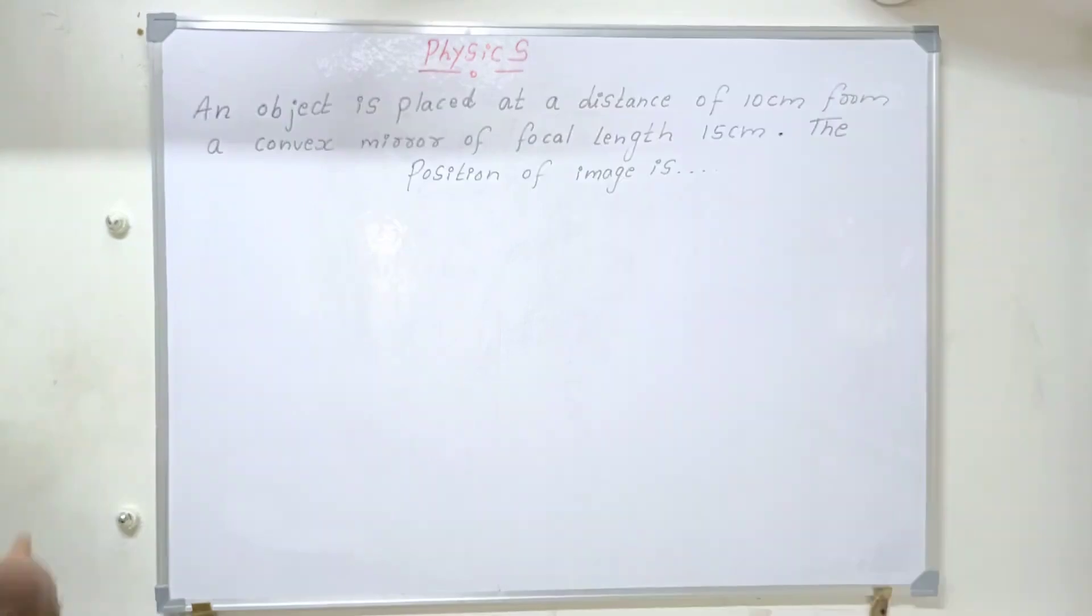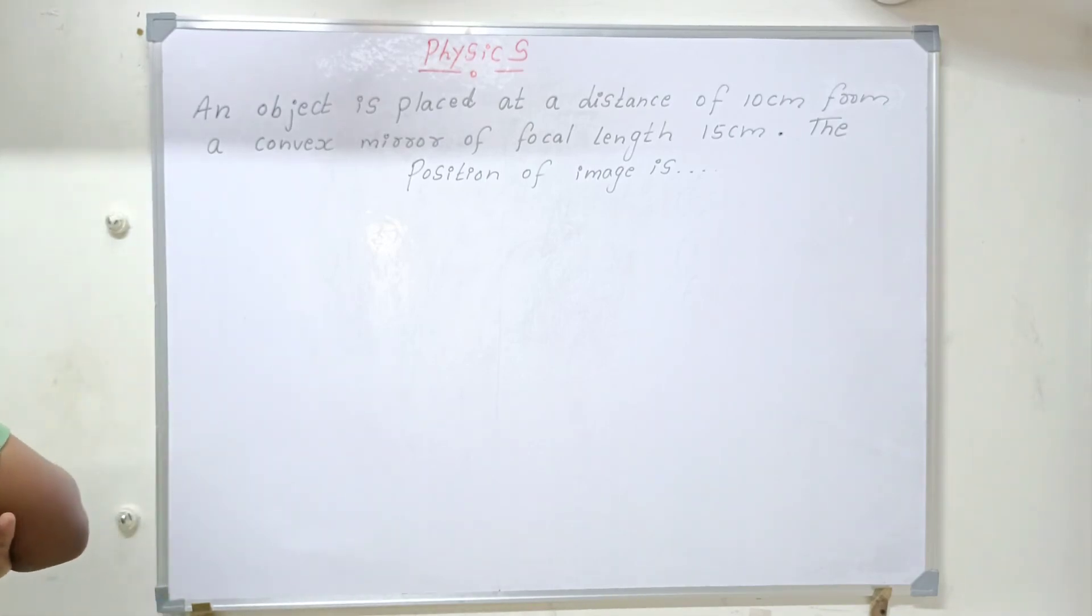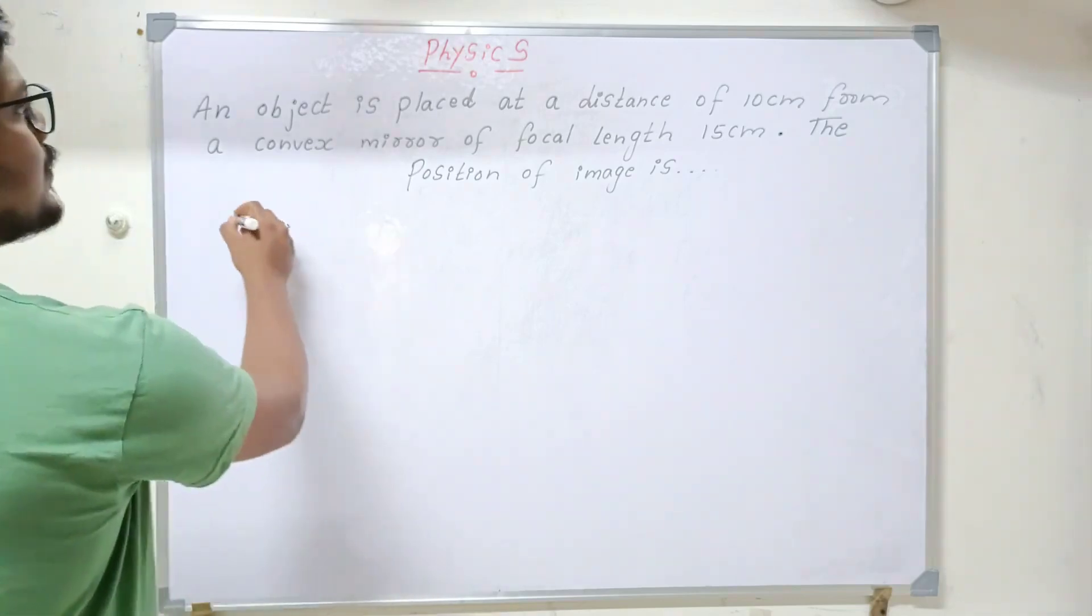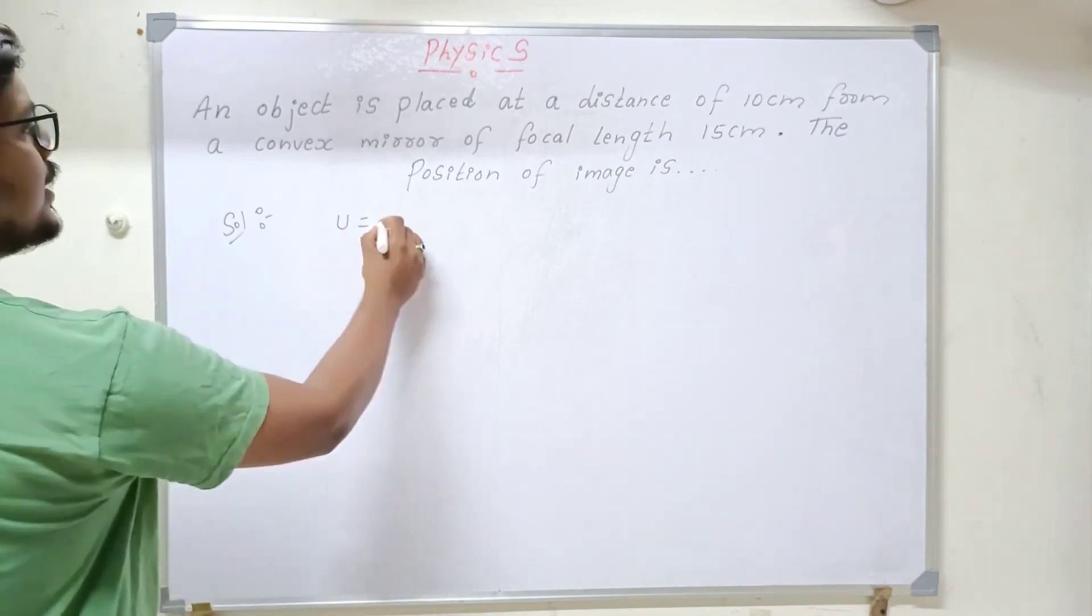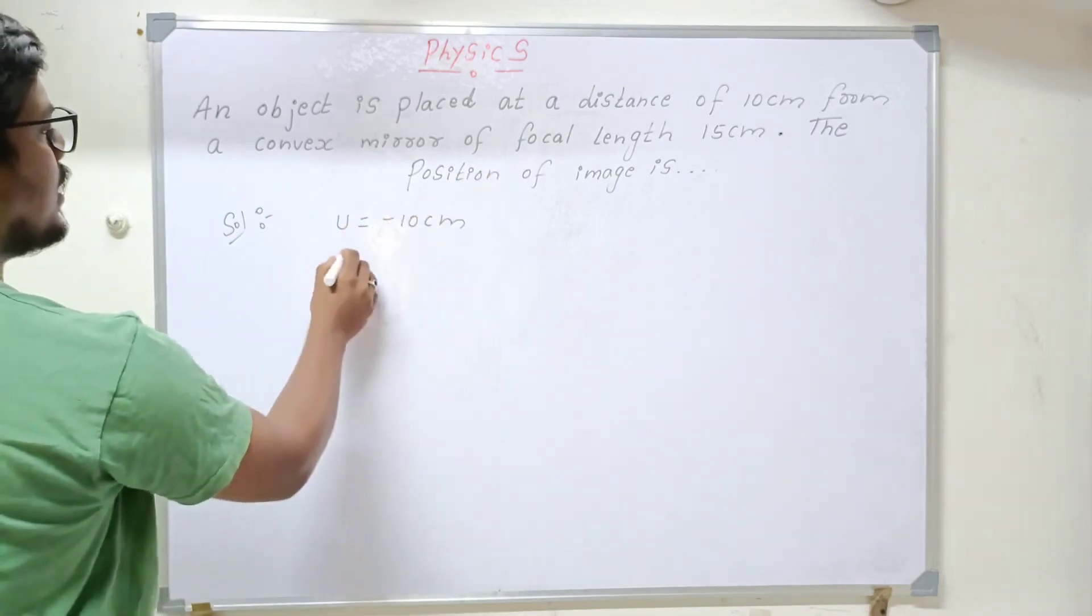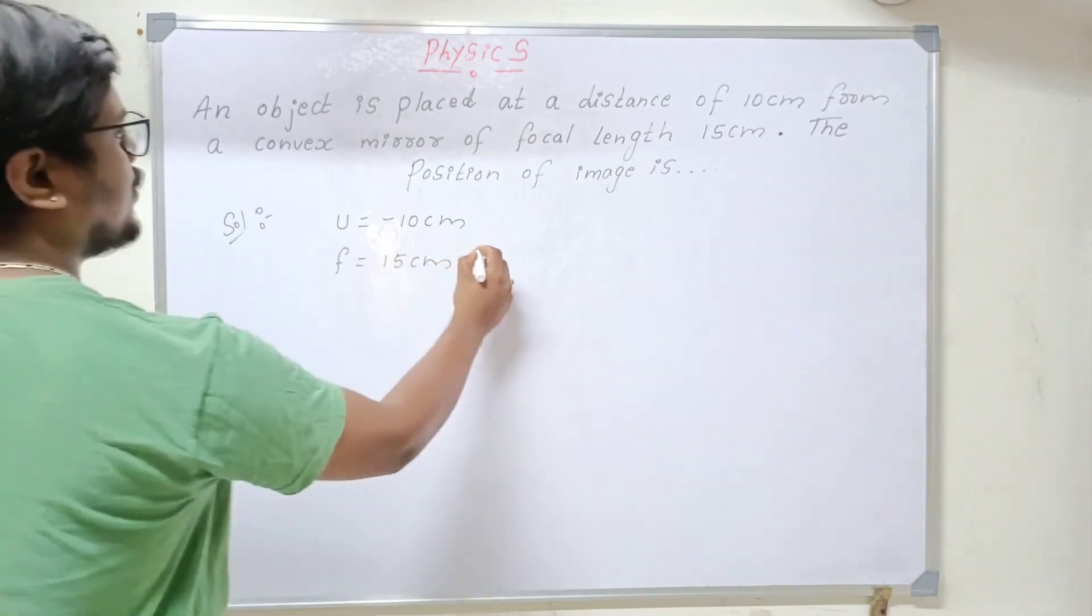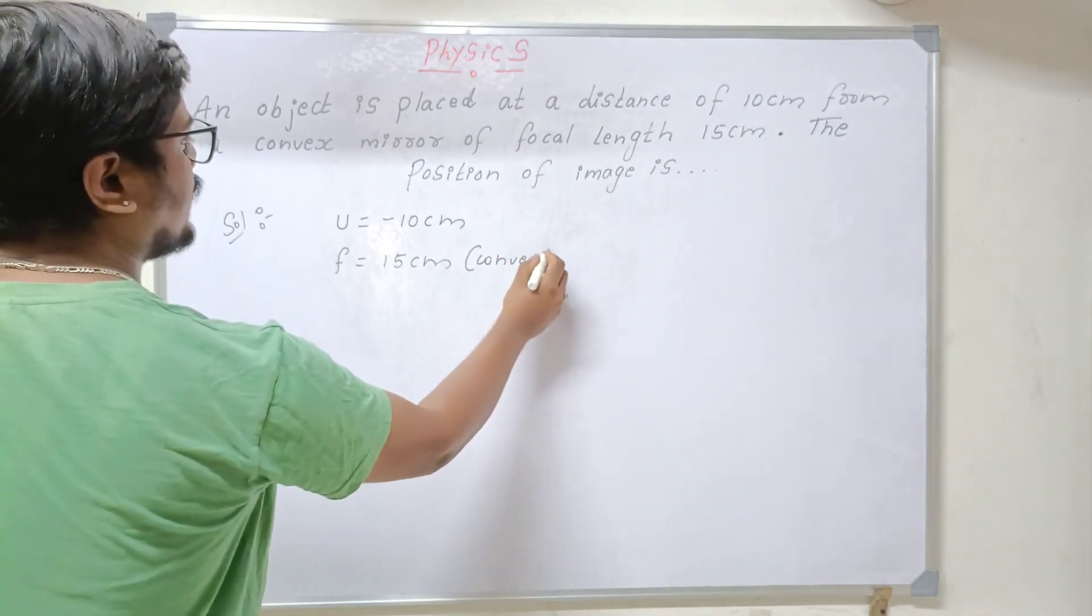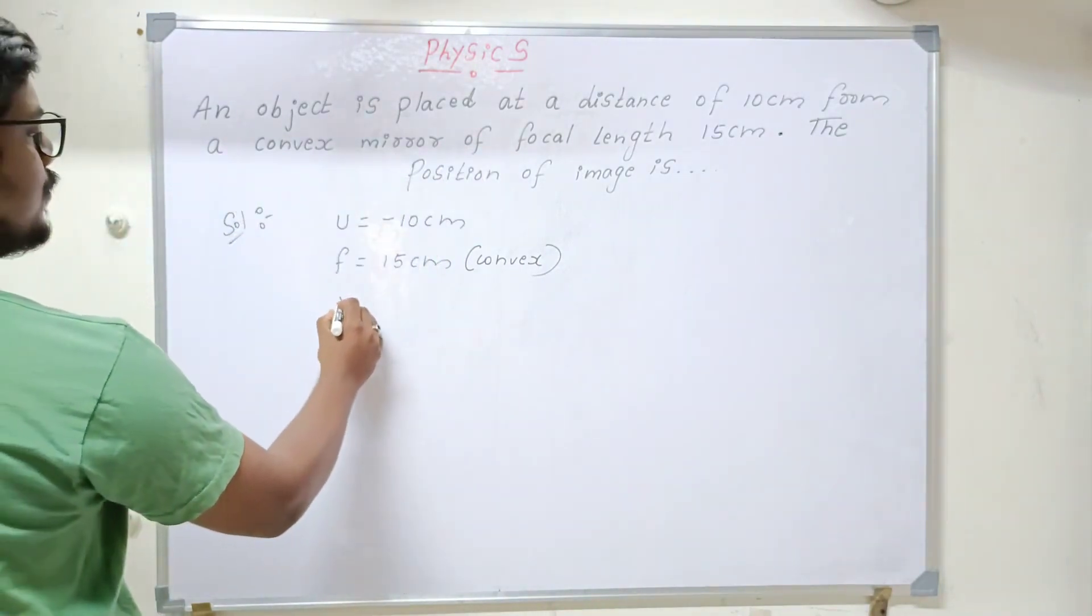An object is placed at a distance of 10 cm from a convex mirror of focal length 15 cm. Find the position of the image. This is a 5 mark question in your 10th standard. How to solve this type of thing? First you need to understand what all is given. Here they have given the distance of an object U, which I said to you should take always negative, that is minus 10 cm. And focal length F equals 15 cm. We need to write positive because it is convex. Instead of convex, if I had given here concave, I would have written minus 15. I need to find the position of the image, that is V.